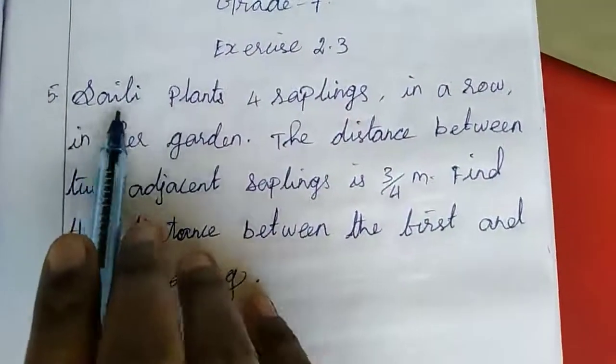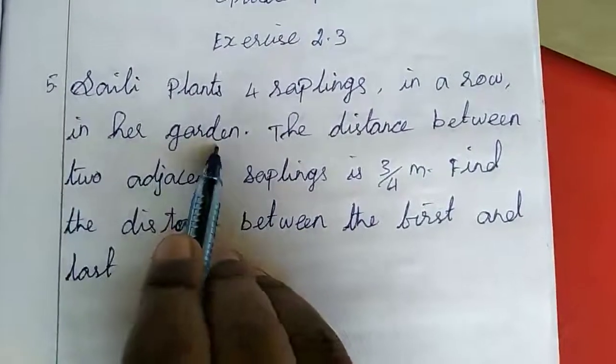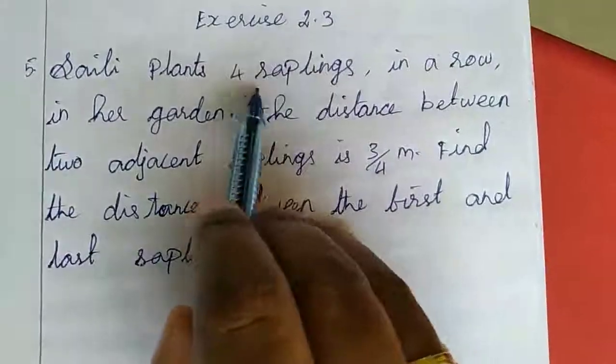5th sum is: Siley plants 4 saplings in a row in her garden, 4 saplings in a row.